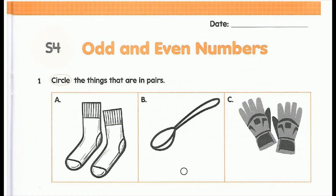Next comes a spoon. Is the spoon paired? Can we see two spoons? No, so we cannot circle the spoon. Next, here we can see two gloves, so it is paired and we can circle a pair of gloves.